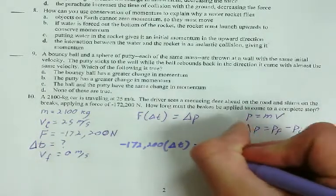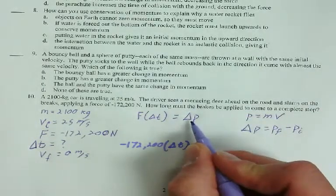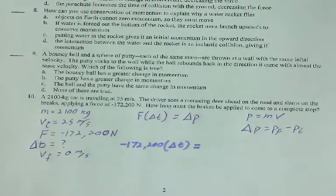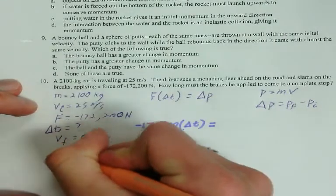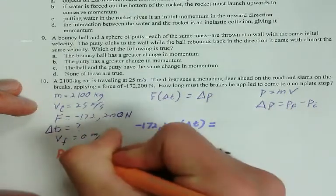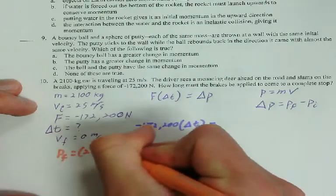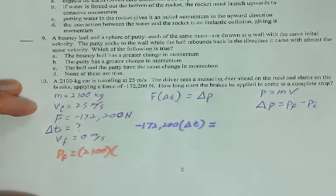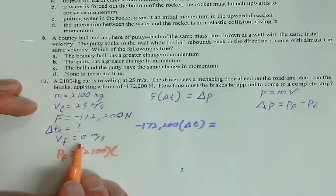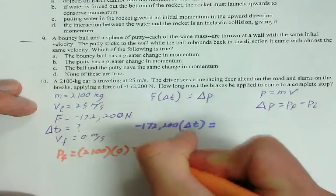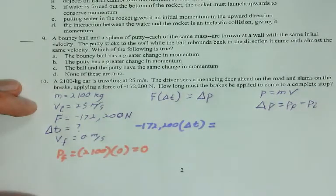Okay, then we need this delta P business. We need to figure out the delta P. And delta P is final minus initial. So, I need to find those values. So, P final first. P is MV. So, MV. To find the P final, I need the final velocity, which is zero. So, PF is just zero.